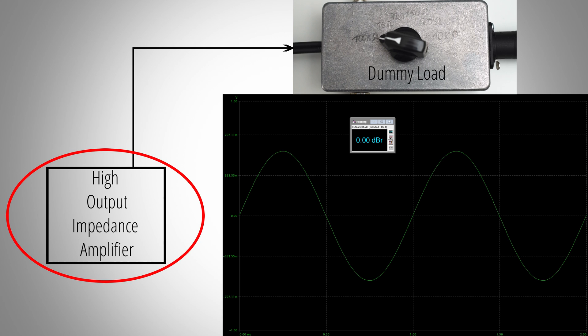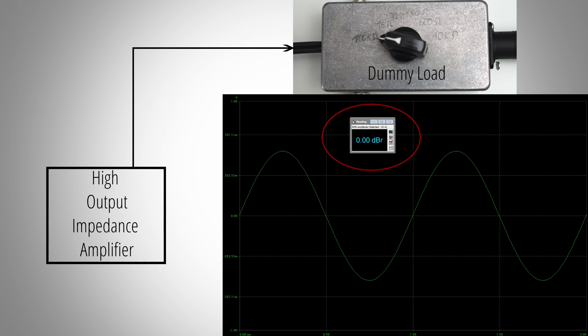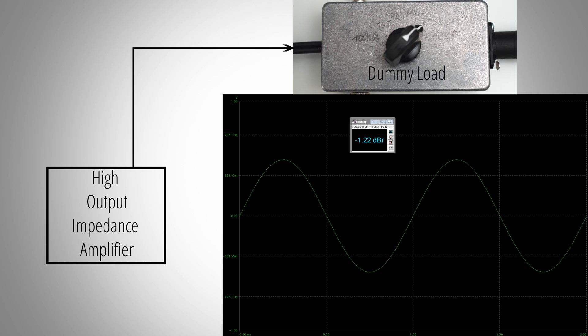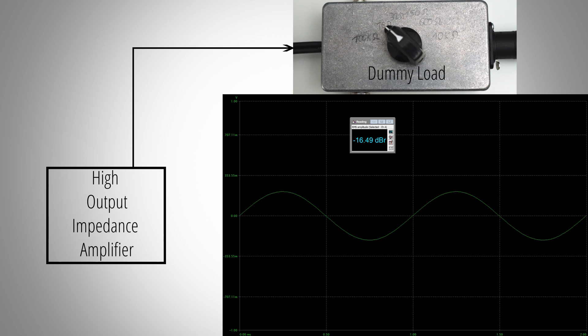Now I've swapped to an amp with a high output impedance, currently outputting our reference signal unloaded. When I connect the 600 ohm load, the signal already dropped by a bit more than a decibel. Connecting the 16 ohm load, the amplitude decreased significantly — by a whopping 16 decibels. That's because the 16 ohm load wants to draw a high amount of current which the amplifier cannot deliver due to its high output impedance, and thus the voltage drops significantly.